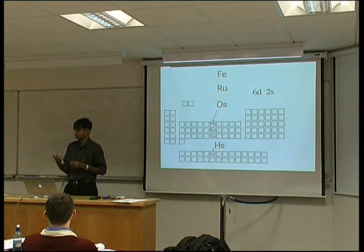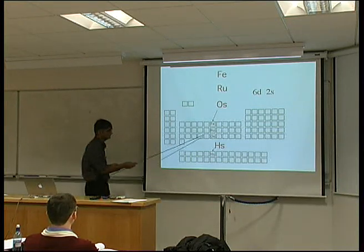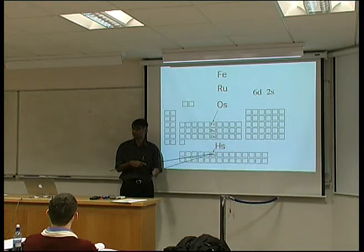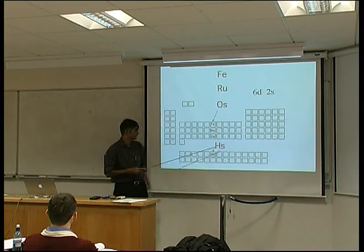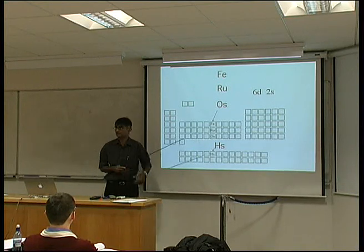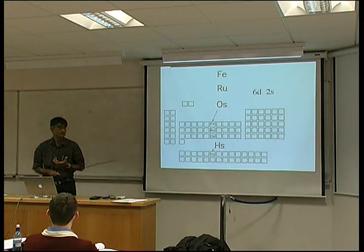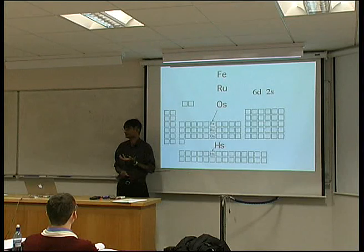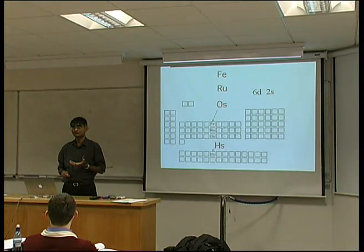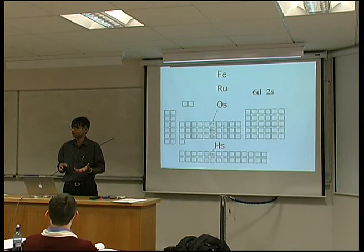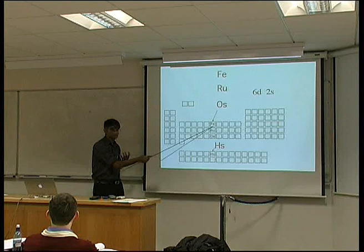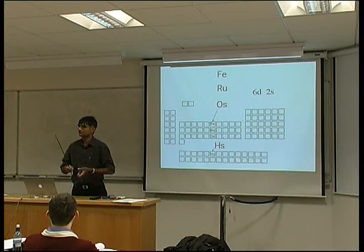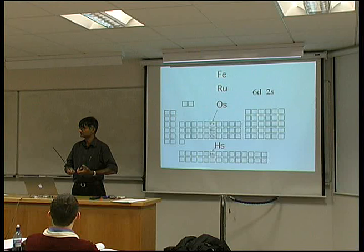But iron is the only one which has a body-centered cubic crystal structure. Ruthenium and osmium have a hexagonal close-packed crystal structure, and hassium occurs in such small quantities that we don't know its crystal structure. Hexagonal close-packed metals in general don't have good properties. We are very lucky that iron has a body-centered cubic crystal structure, and the reason is that it's ferromagnetic. These heavier atoms are larger and further apart, so they don't have the interaction that leads to ferromagnetism, and they end up as hexagonal close-packed.